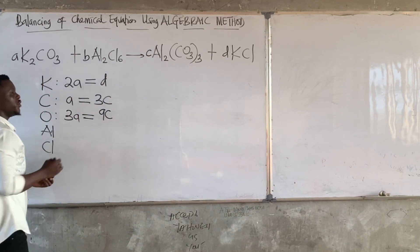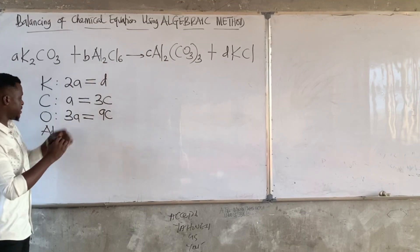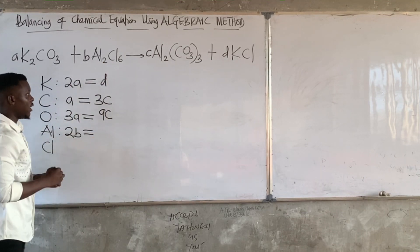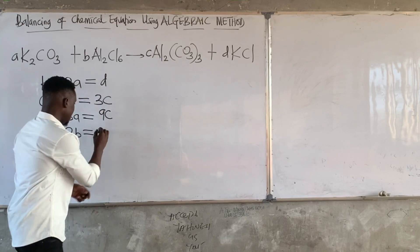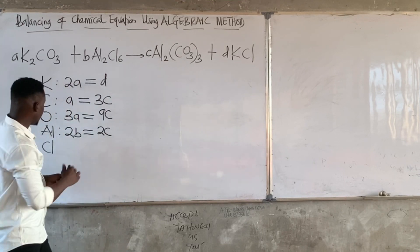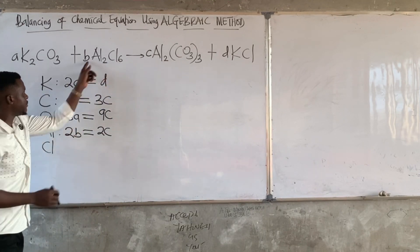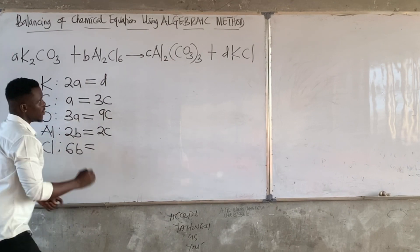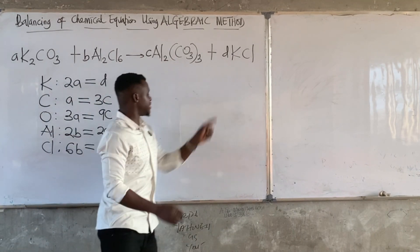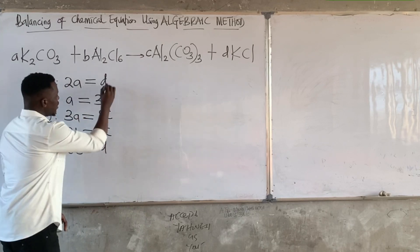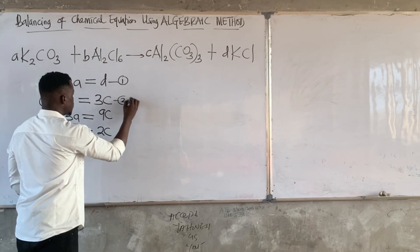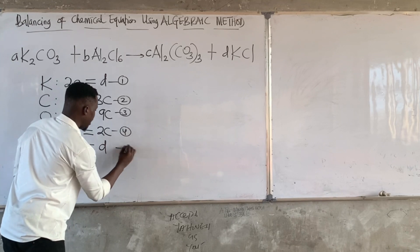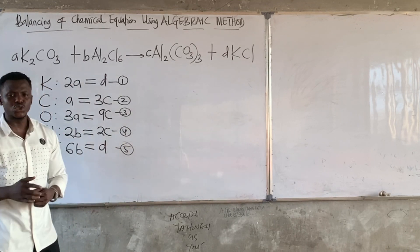Moving down to aluminum: aluminum is 2 here, so 2 times B is 2B, and on the right-hand side 2 times C is 2C, giving 2B = 2C. Now for chlorine: chlorine is 6 times B, so 6B. Chlorine on the right-hand side is 1 times D, so 6B = D. This gives us equations 1 through 5.